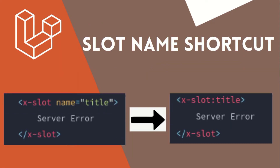The next thing is the slot name shortcut. In previous releases, slot names were provided using the name attribute — you would write x-slot with name equal to title. Now there's a shortcut: you can simply write the title directly. Both methods work in Laravel 9, so if you have old code using the previous syntax it will still work without any problem.